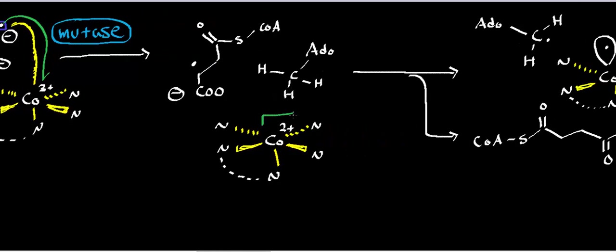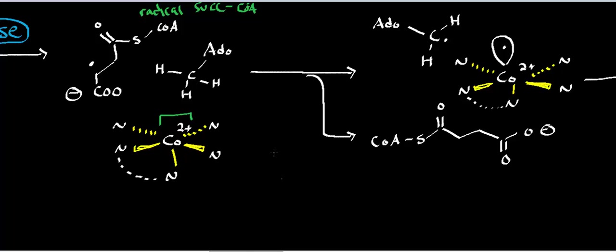And so now, again, you have the cobalt in the 2-plus oxidation state, and now you have a radical succinyl-CoA. So this right here is a radical succinyl-CoA. Now keep in mind, we have this fully protonated deoxyadenosine in the active site that's part of the B12. And so now what's going to happen is you're going to get a hydrogen abstraction, but this time we're going to abstract it from the 5-prime deoxyadenosine.